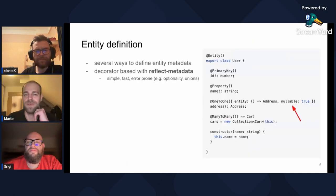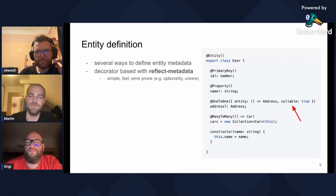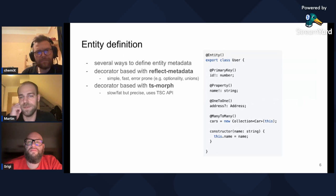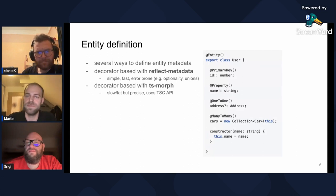So how does an entity look like? There are several ways to define the metadata. We can use decorators together with the so-called Reflect metadata plugin. This allows inferring simple types like string, number, or date from the TypeScript entity definition, but it fails on things like optionality, which needs to be set explicitly. A better alternative is using decorators with TS Morph, a library wrapping the TypeScript compiler API. This allows inferring any information available to the type system, including optionality, interface names, or union types. The downside is a runtime dependency on TypeScript, meaning bigger server-side bundles. It is slower, but results are cached and the cache can be warmed up through the CLI, so performance-wise it is okay.